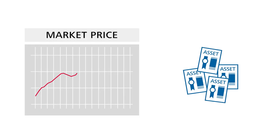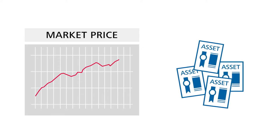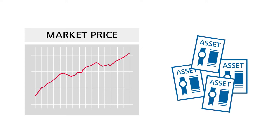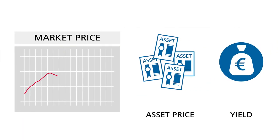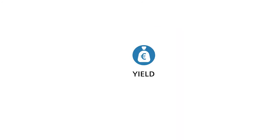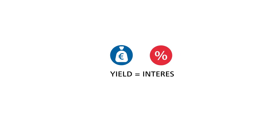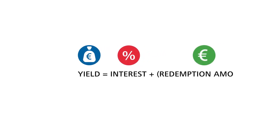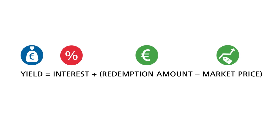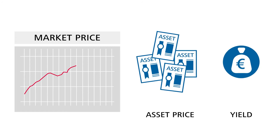Second, the higher demand for assets drives up their market prices. This is down to the standard mechanism in the markets — things become more expensive when demand for them rises. As bond prices rise, bond yields, that is the total return they generate, fall. This is because the return an investor receives when a bond reaches maturity also derives, in addition to the interest paid, from the difference between the redemption amount determined in advance and the now higher price. Therefore, if the price of the bond increases, the bond yield falls.